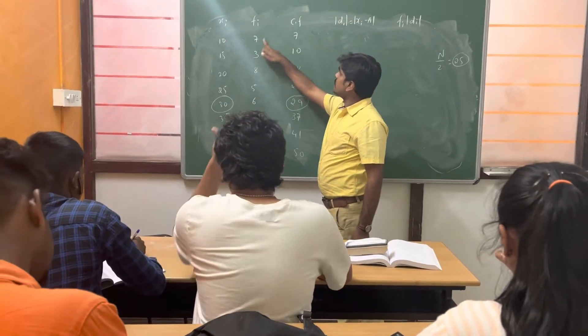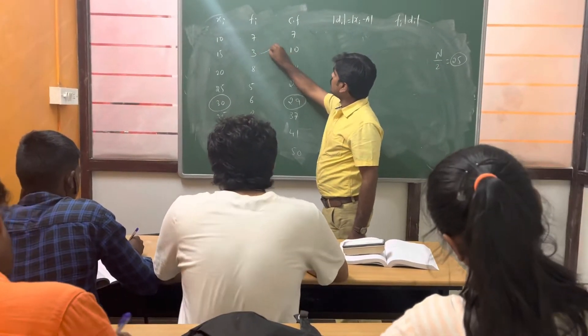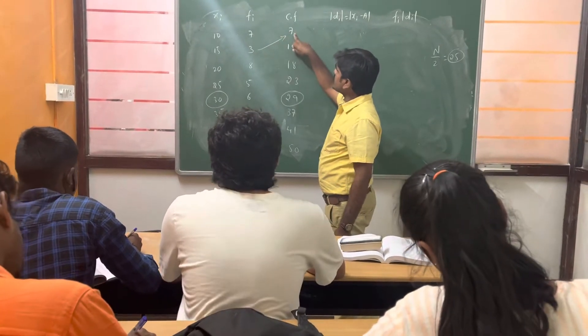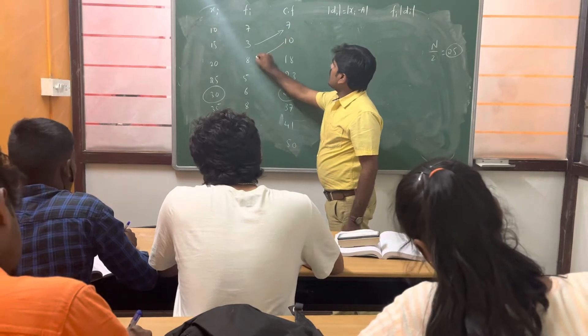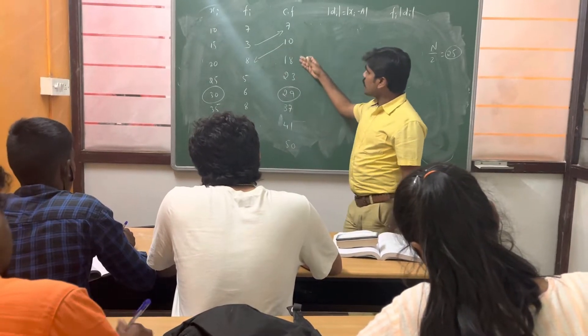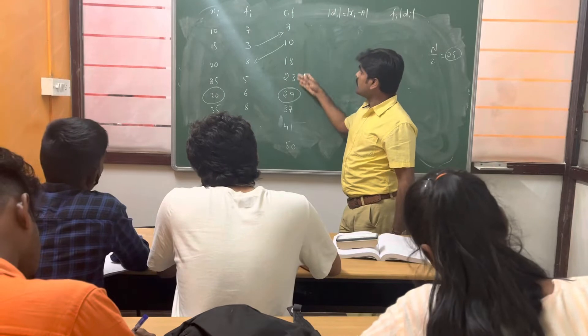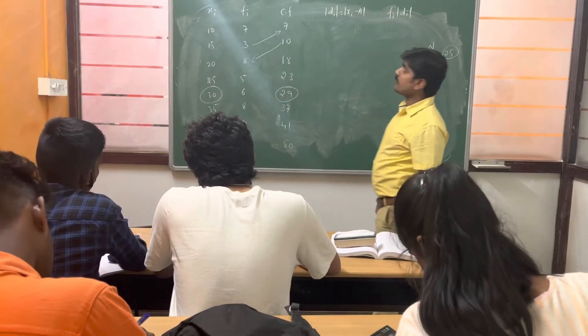So take the first frequency, 7 as 3, then corresponding to the other element. 7 plus 3, 10, 10 plus 8, 18. Corresponding values, add and simplify as a cumulative frequency.